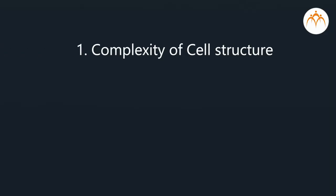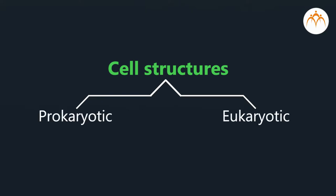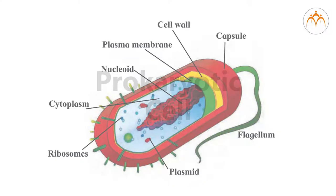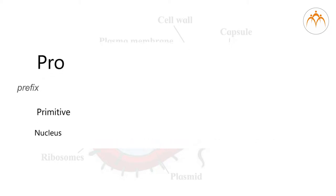Whitaker has considered the following features or characteristics to classify organisms. One: Complexity of Cell Structure. It means whether the structure of a cell is simple or complex. There are two types of cell structures, namely Prokaryotic and Eukaryotic. Prokaryotic Cell: the meaning of 'Pro' is primitive and the word 'Karyon' stands for nucleus. It means these cells or organisms do not have a true nucleus.